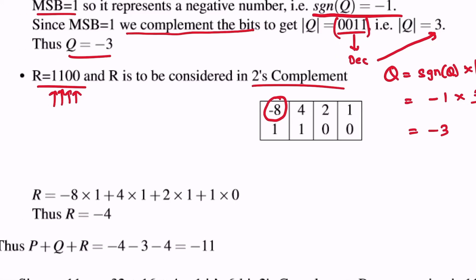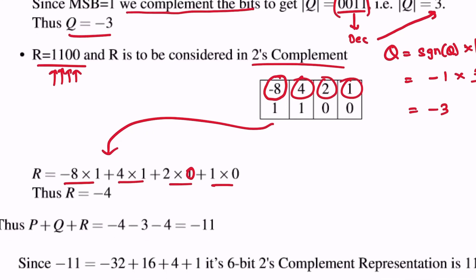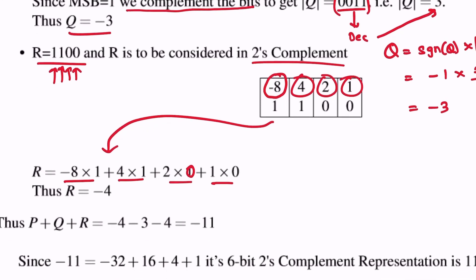So 1100 has the binary weights 1, 2, 4, and minus 8, and it is expanded as follows: minus 8 times 1 plus 4 times 1 plus 2 times 0 plus 1 times 0. So this is simply minus 8 plus 4, and thus R is equal to minus 4.